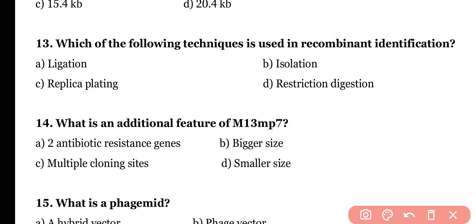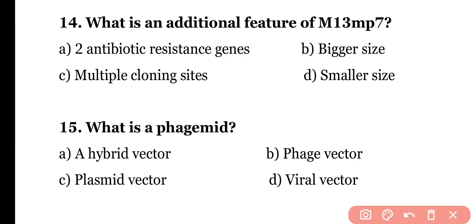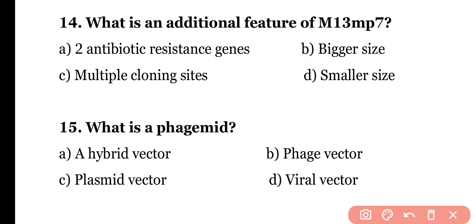Question 14: What is an additional feature of M13 phage vector? Options include phage filtration, antibiotic resistance genes present, bigger in size, or multiple cloning sites present and smaller in size. The correct answer involves multiple cloning sites being present.